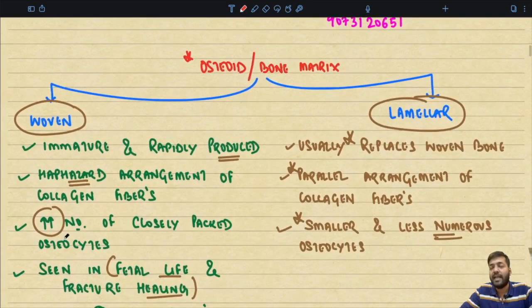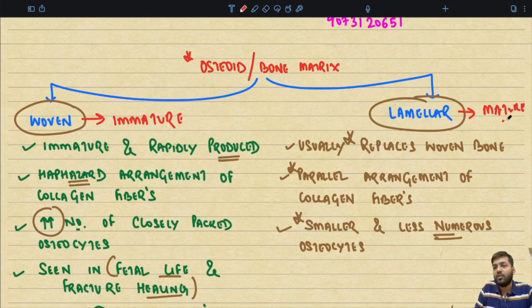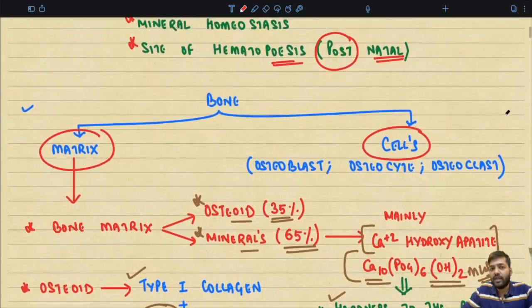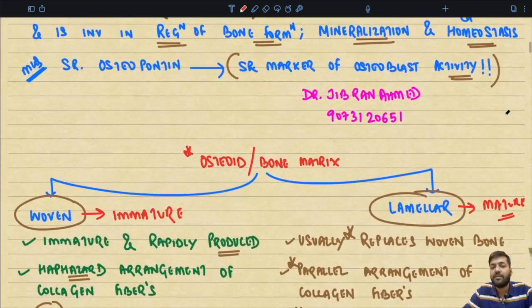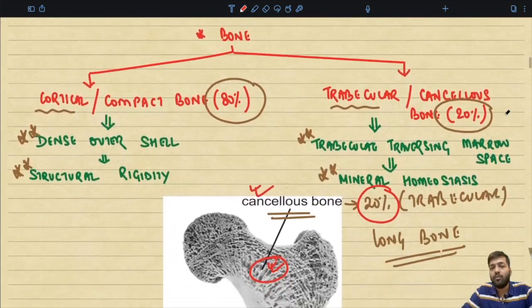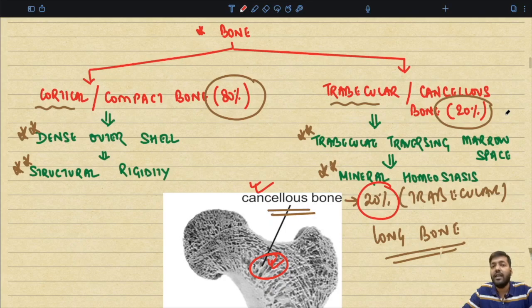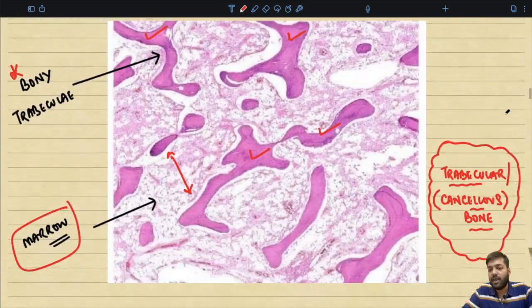The concept of cortical and cancellous bone should be clear histologically. Woven bone is the immature bone, whereas lamellar bone is the mature bone. We have seen that bone is made up of matrix and cells, discussed the matrix in detail, seen that bone can be of two types — woven and lamellar — and that long bones are divided into cortical or compact bone and inner trabecular or cancellous bone.